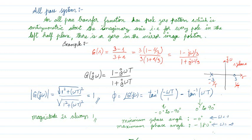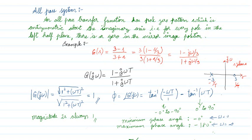What about the magnitude? The magnitude is the square root of (real part squared plus imaginary part squared); since the numerator and denominator are the same, magnitude is always 1. The phase angle is tan⁻¹(−ωT) − tan⁻¹(ωT). Since tan inverse ranges from 0 to 90°, the phase ranges from 0° to −180°. So for an all-pass system, magnitude is always 1 and the phase angle is from 0° to −180°.